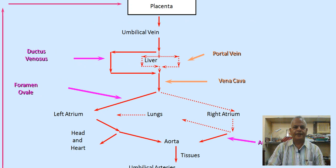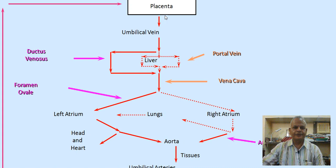Regarding placental circulation, the ductus venosus, ductus arteriosus, and foramen ovale are key structures. Fetal blood does not go to the fetal lungs. Through the umbilical vein, blood goes to the placenta and then to the maternal circulation, wherein carbon dioxide from the fetus is exhaled through the mother's lungs.